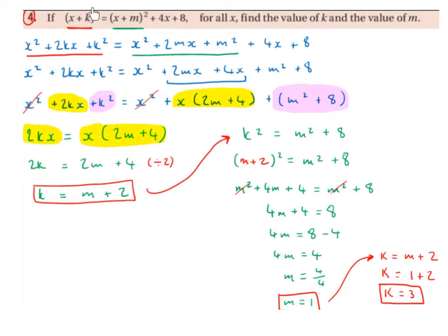If x plus k squared equals x plus m squared plus 4x plus 8 for all of x, find the value of k and the value of m.